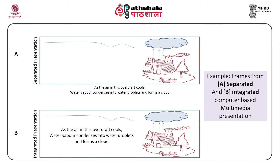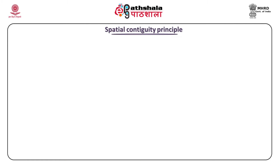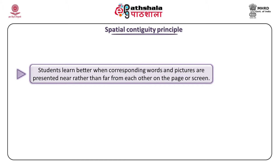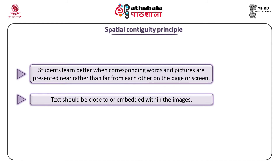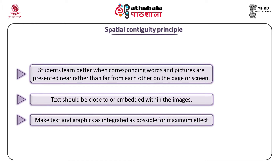There are two types of contiguity principle. The first is the spatial contiguity principle, which states that students learn better when corresponding words and pictures are presented near rather than far from each other on a page or screen. Text should be close to or embedded within images in the presentation. Try to make text and graphics as integrated as possible for effective learning.